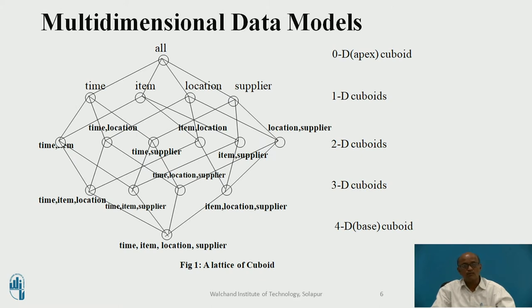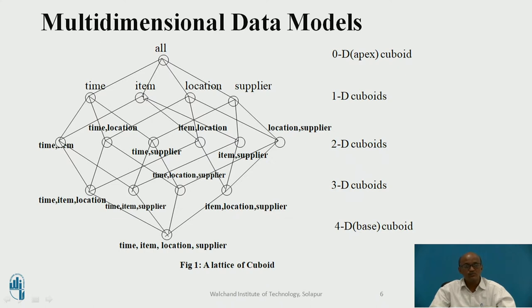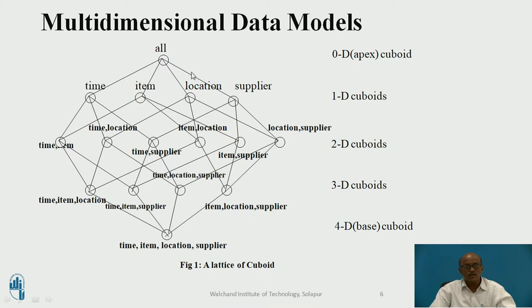Now this cube — the multidimensional data model — shows time, item, location, and supplier: the fields of sales, showing which items were sold, at what time or in which month or quarter, at which location, and who was the supplier. The apex of the cuboid is at zero-dimensional.